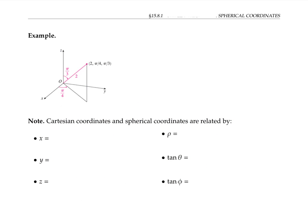In this example, our point has spherical coordinates given by two, pi over four, and pi over three. So two is our value of rho, which tells us the distance from the origin to our point. Pi over four is our value of theta, which tells us the angle between the positive x-axis and the projection of this line segment onto the XY plane. And finally, our phi is pi over three — that's the angle from the positive z-axis down to our line from the origin to P.